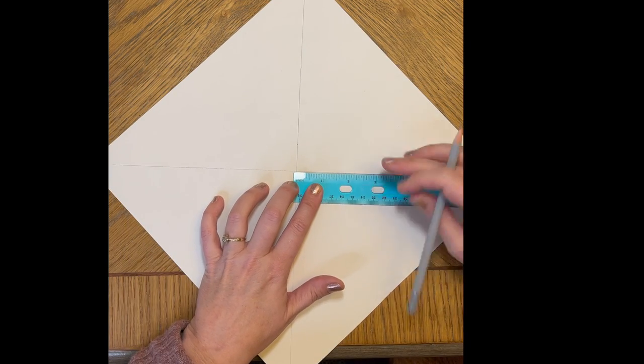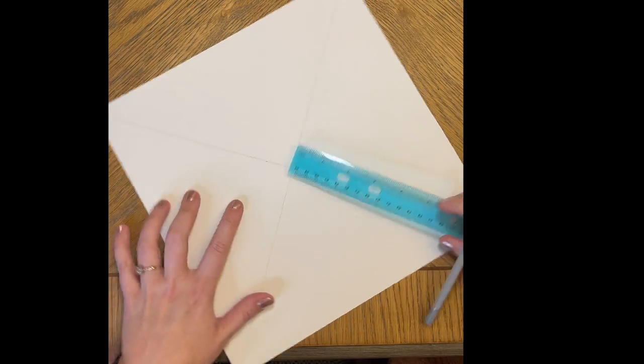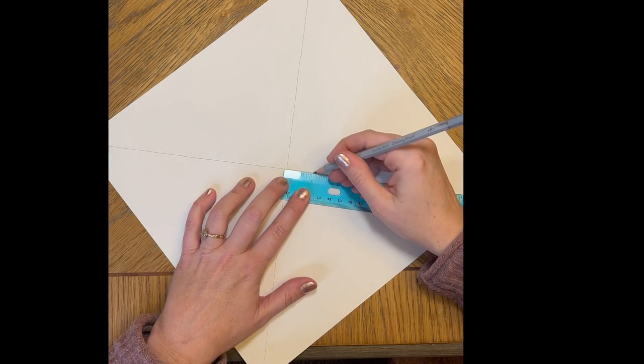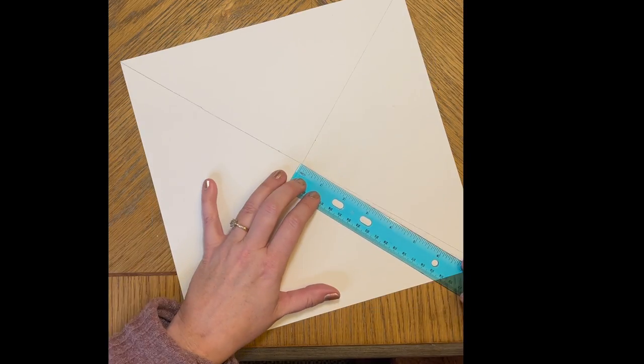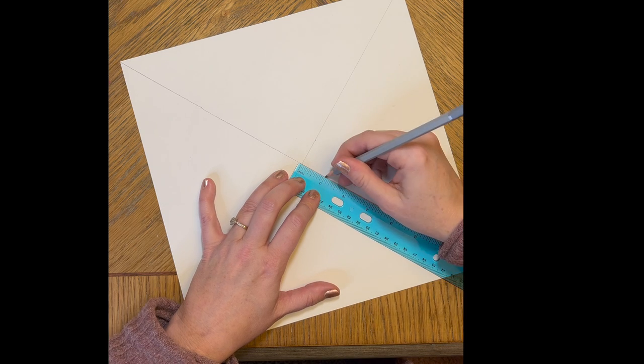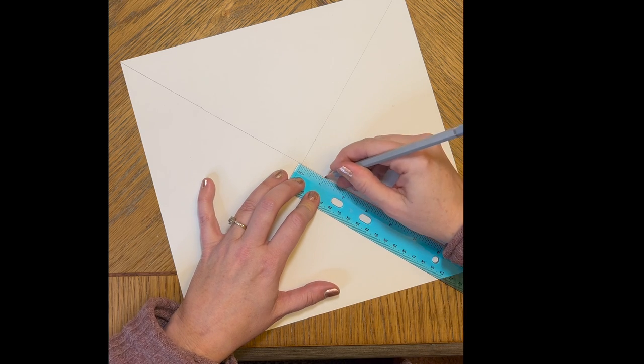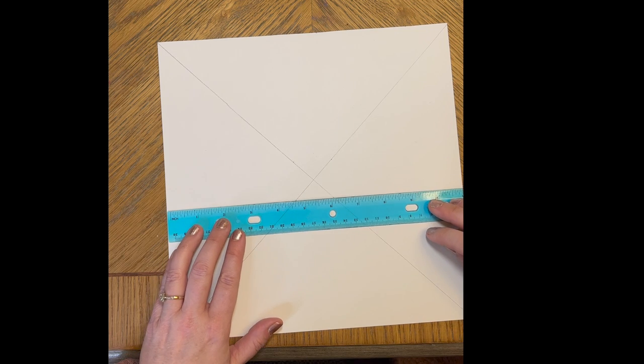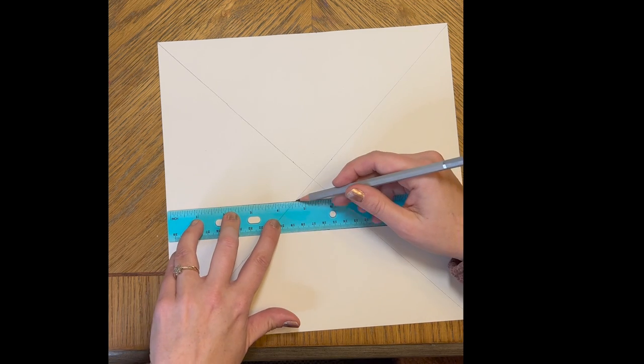We are going to measure out one inch from the center in all four directions. This is going to give us the square that will eventually be our back wall of the perspective room. So go ahead and connect those four dots.